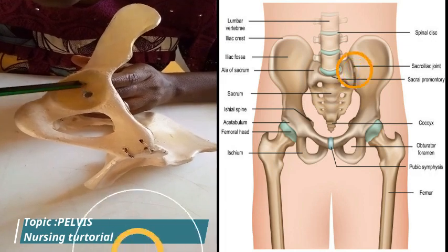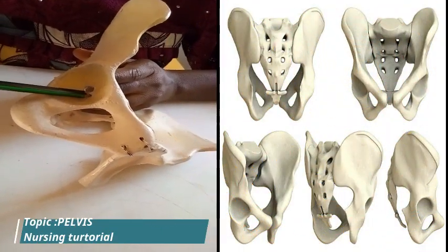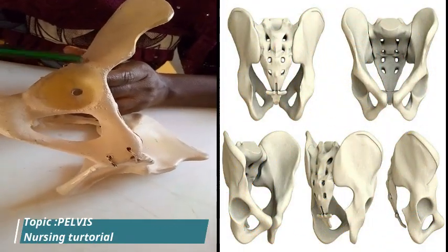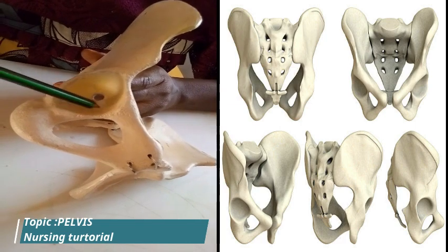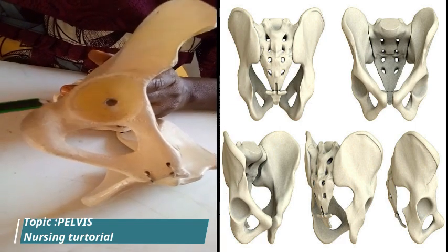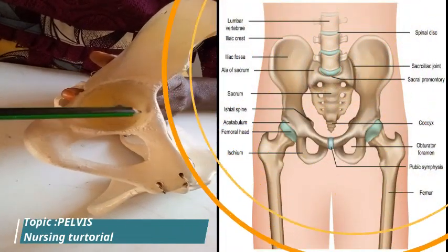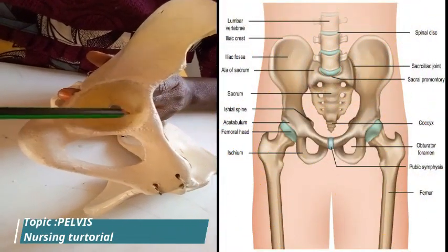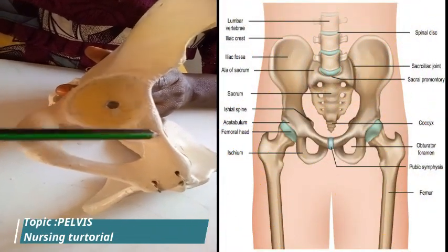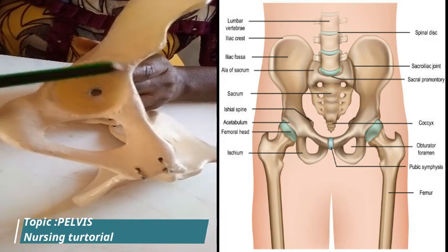Two-fifths of the acetabulum consists of the ileum, two-fifths of the acetabulum is the ischium, and one-fifth of the acetabulum is from the pubic bone.